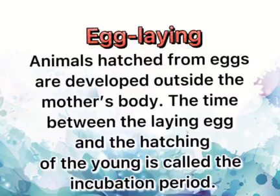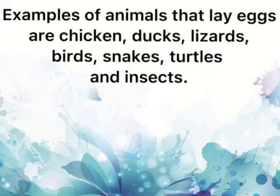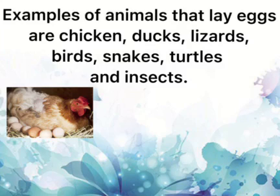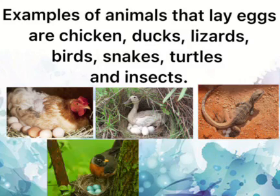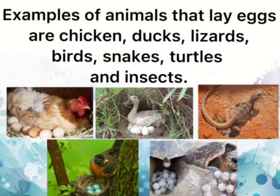Egg laying: Animals hatched from eggs are developed outside the mother's body. The time between the laying of an egg and the hatching of the young is called the incubation period. Examples of animals that lay eggs are chicken, ducks, lizards, birds, snakes, turtles, and insects.